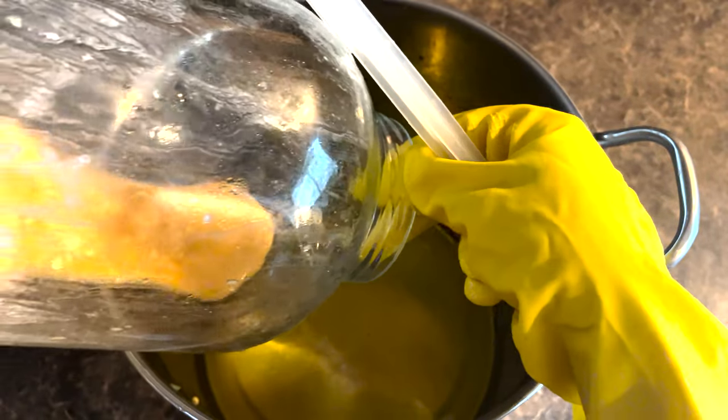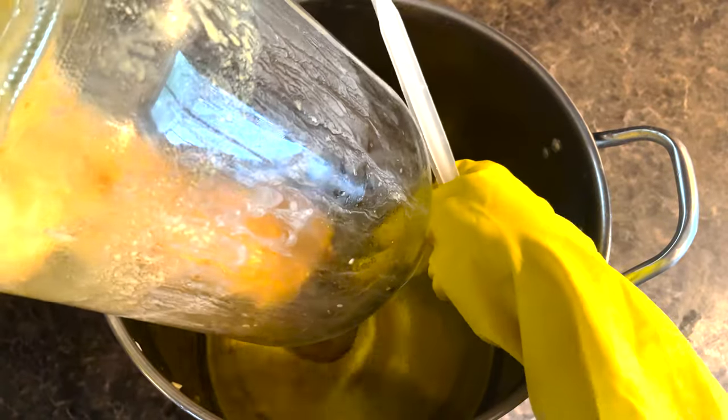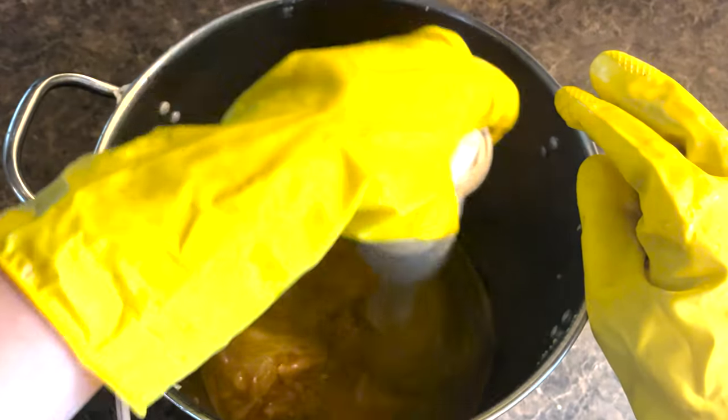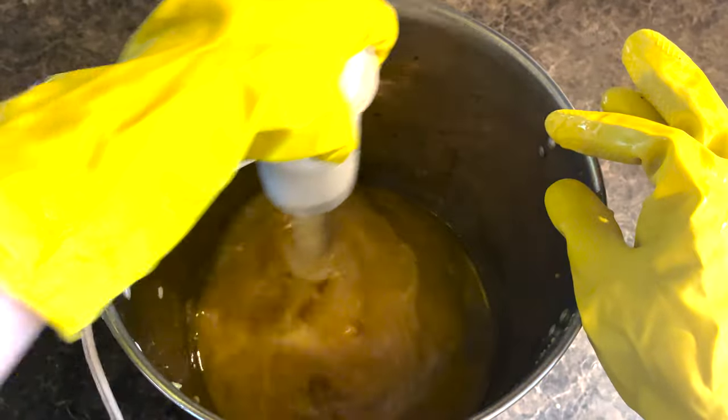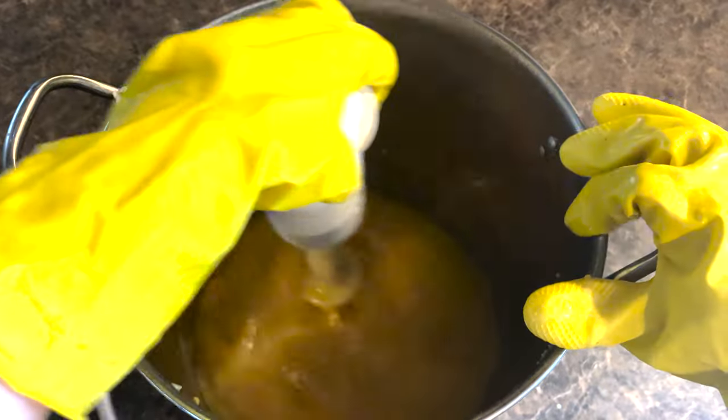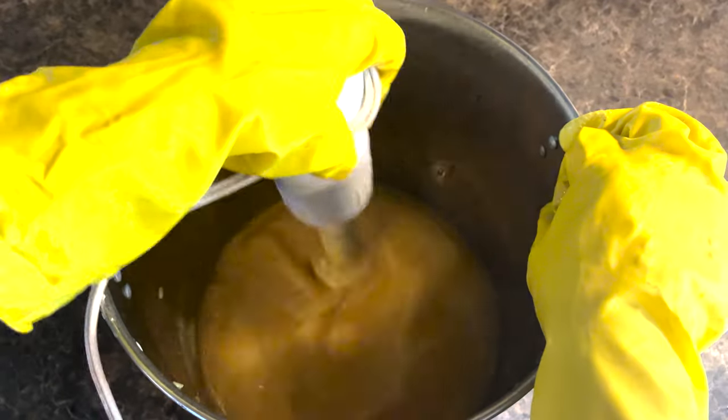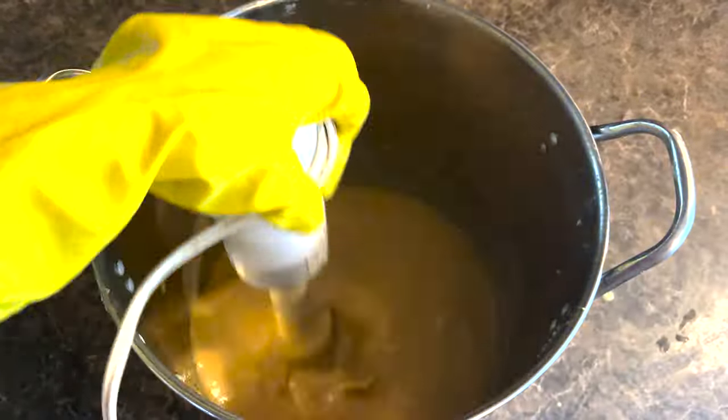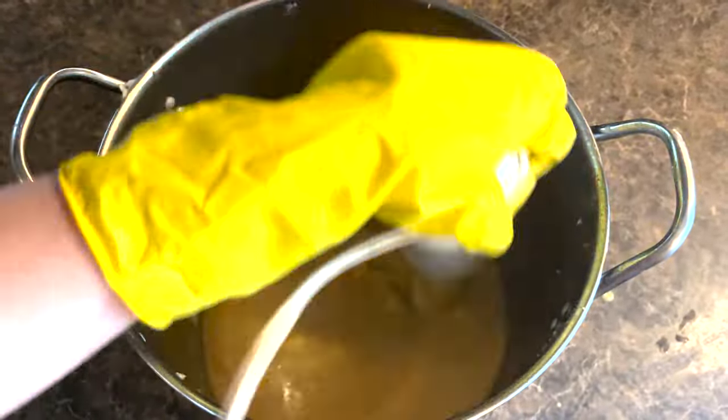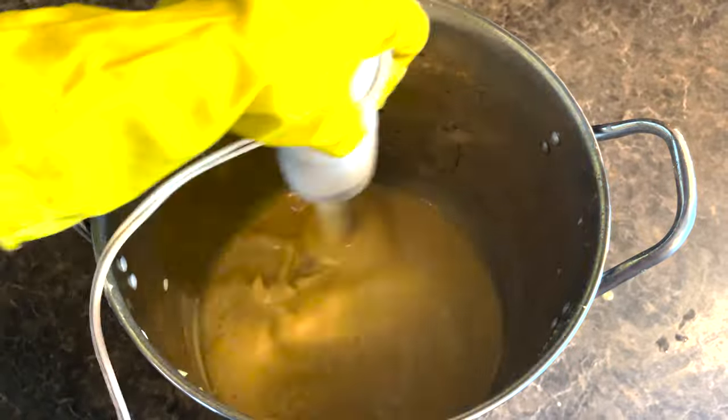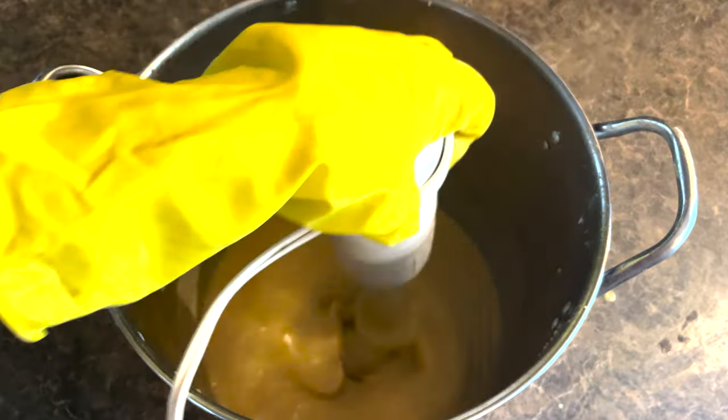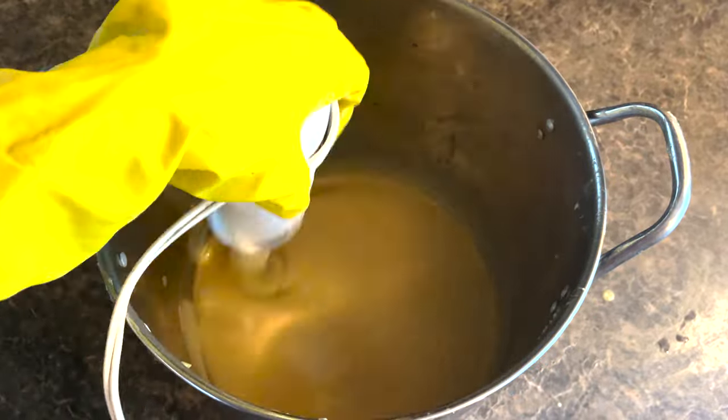Next we will be blending all of our ingredients together in our pot with a stick blender, and you will continue to mix until you see trace. Trace is once you bring your stick blender up to the top and your soap actually begins to leave a little bit of a trail on the surface of your oils. Once you see trace on the top, we are now done with mixing.